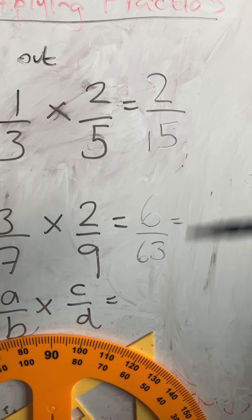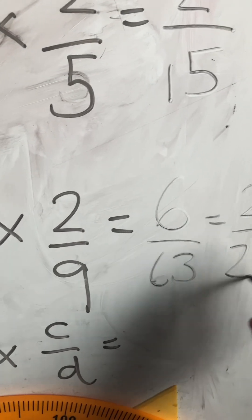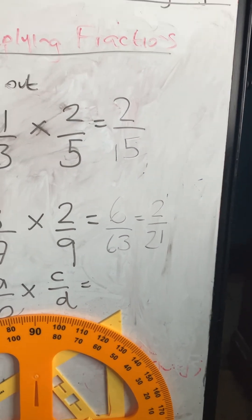I can simplify that by dividing top and bottom by 3, so I get 2 21sts. That's how to do that second one there.